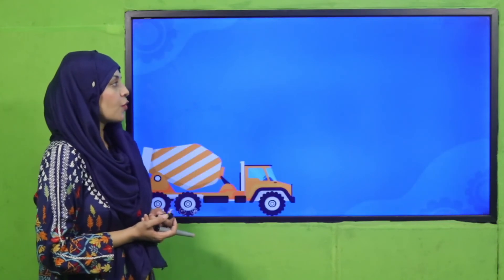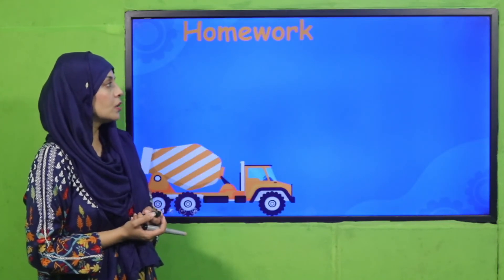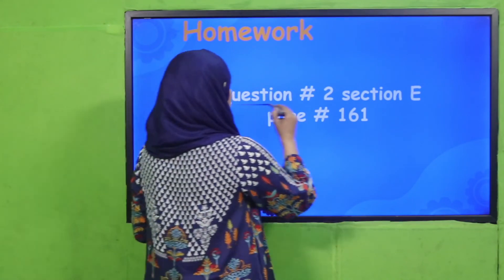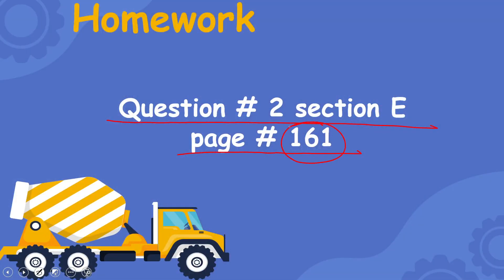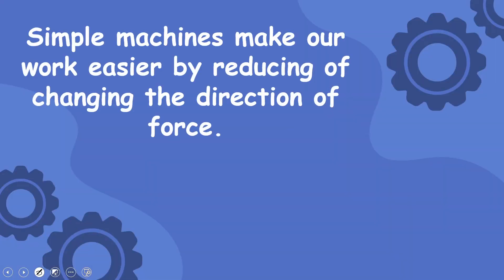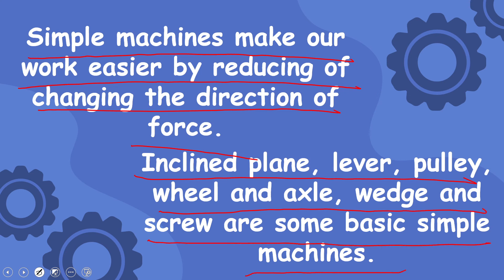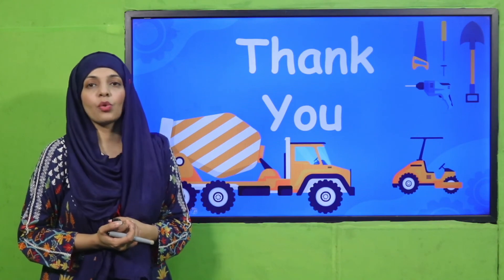Now is the time for practice — download the worksheet from the description box below, complete it, and the homework is question number two, section E, given on page number 151. The wrap-up of the lesson: simple machines make our work easier by reducing and changing the direction of force. An inclined plane, lever, pulley, wheel and axle, wedge, and screw are some basic simple machines. I hope now you know how an inclined plane is used and what it is. Have a good day, thank you so much, and Allah Hafiz.